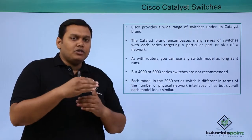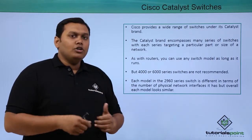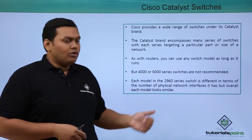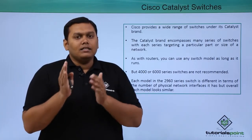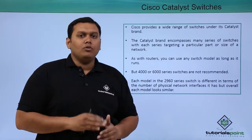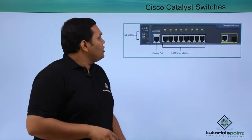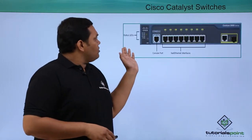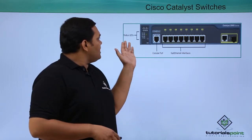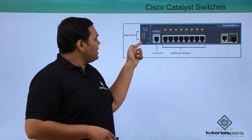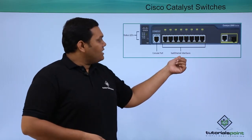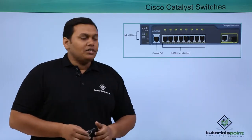Based on the physical interfaces available, each model in the 2960 series looks similar overall, but the physical network interfaces vary from one switch to another. On the rear view of the Catalyst switch, the status LED lights can be seen, along with the console port and fast Ethernet interfaces.